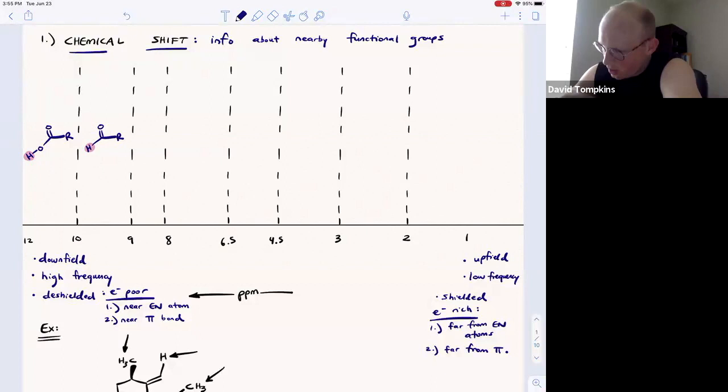Another very important range, perhaps the most important for you to recognize, is the aryl region. Aryl means that there's a hydrogen bound to an sp2 carbon of an aromatic ring, such as benzene. Those show up between 6.5 and 8.